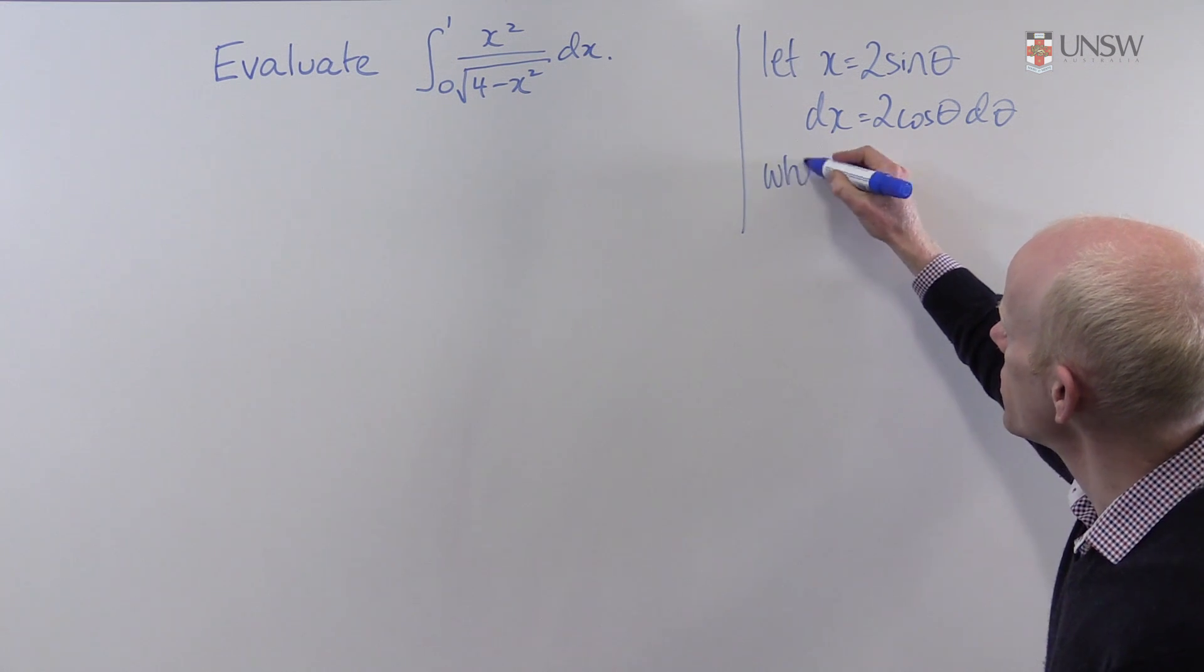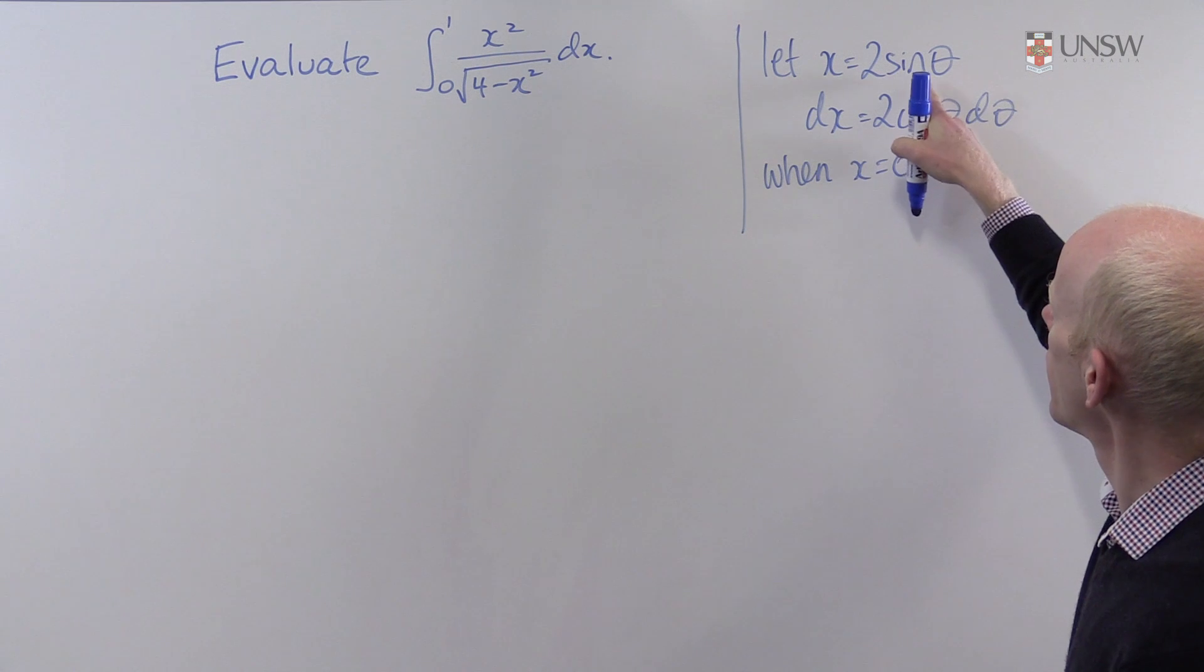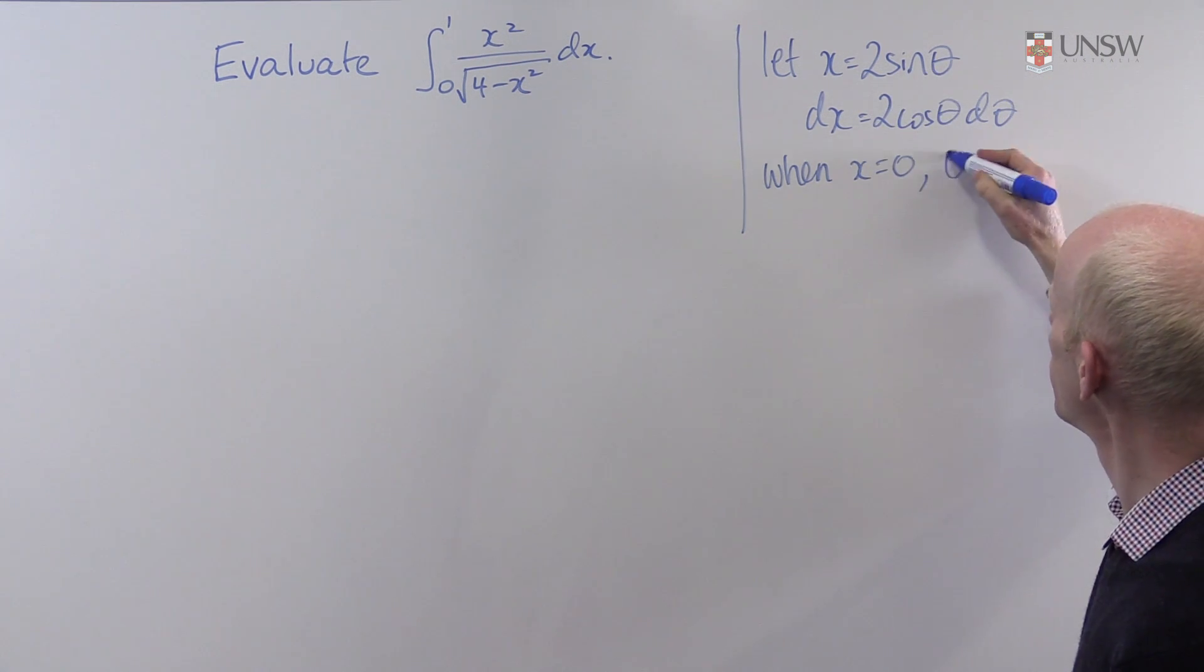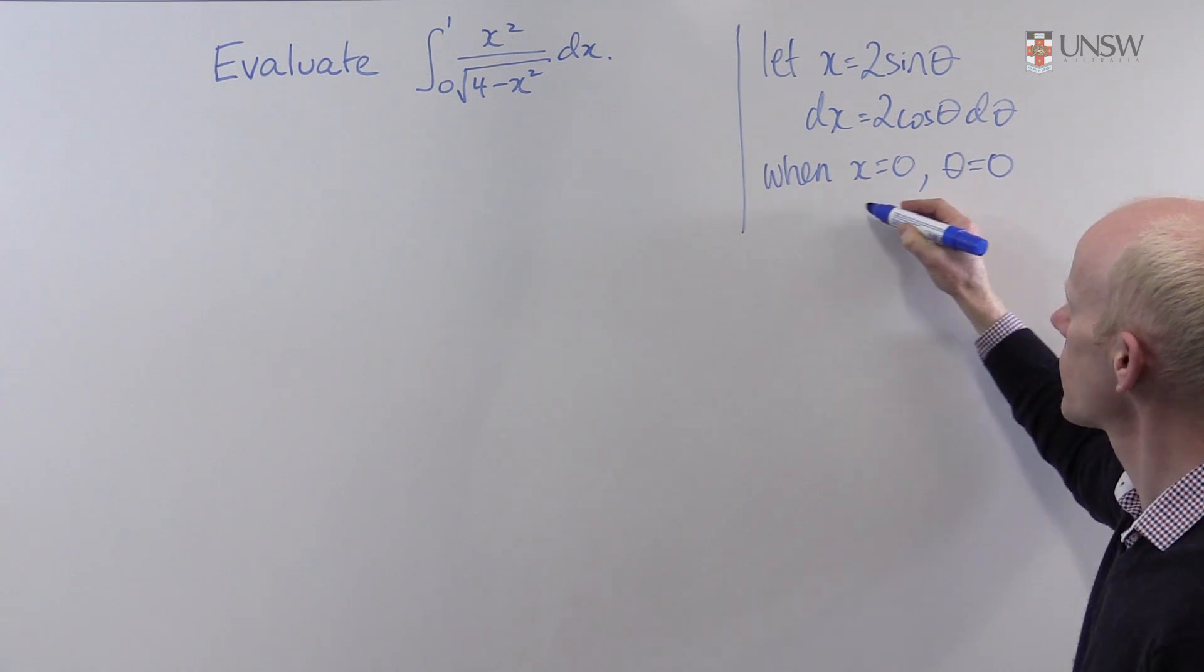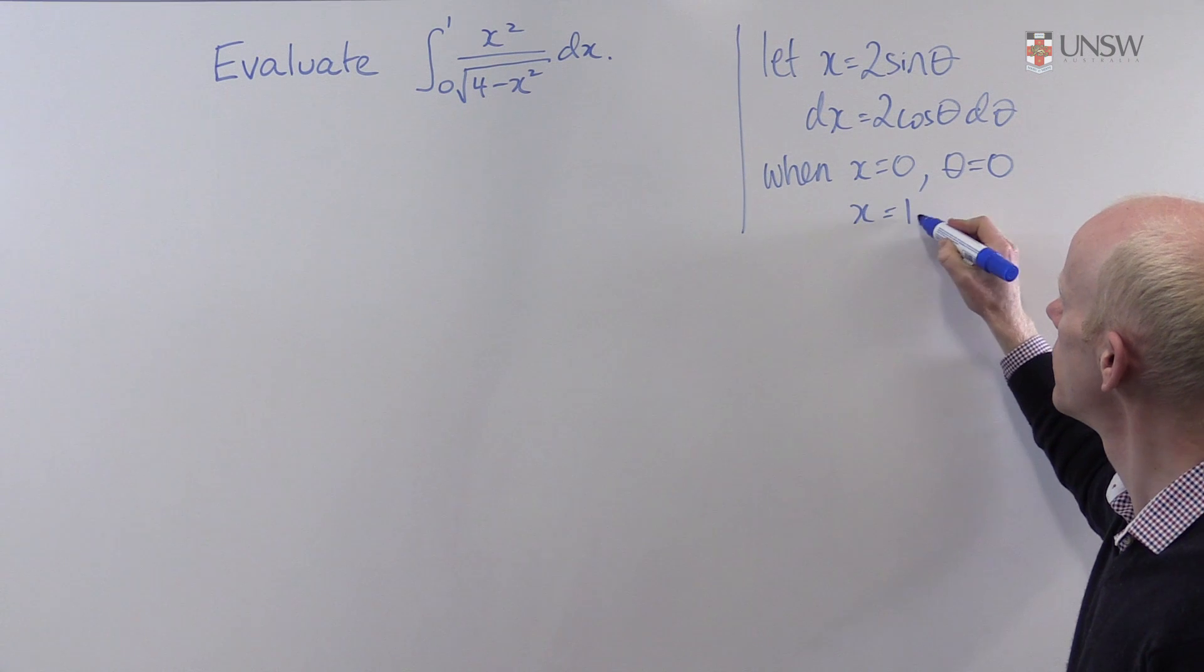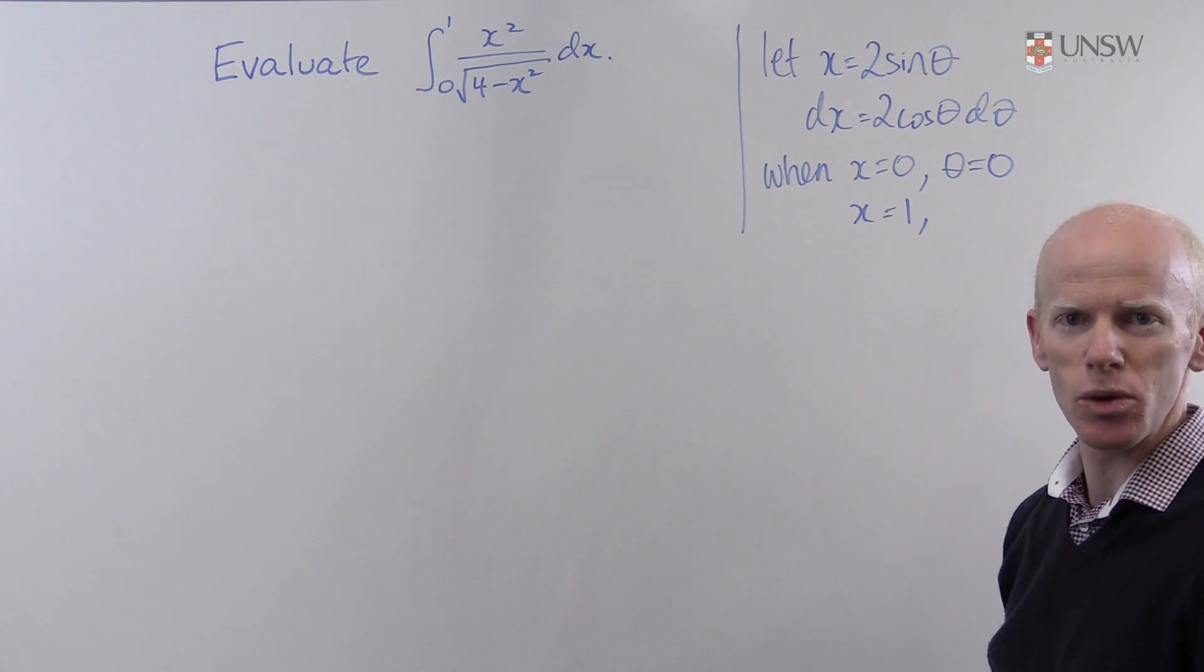When x equals 0, I have sin θ equals 0, so θ is 0. Similarly, when x equals 1, sin θ is 1/2, so θ would be π/6.